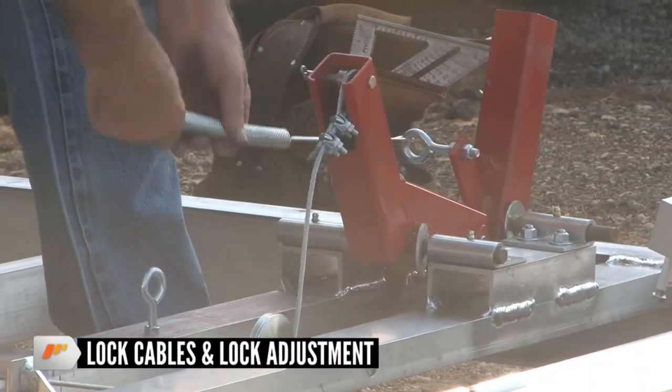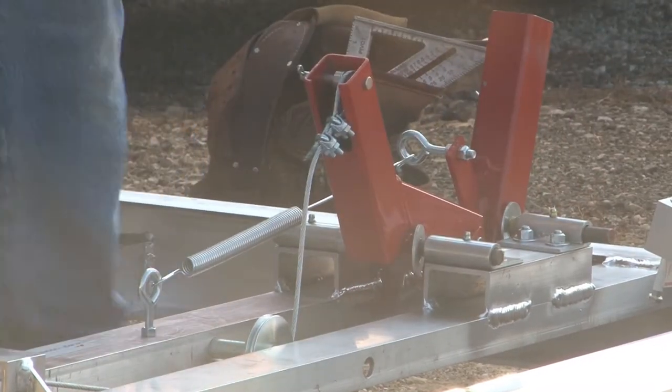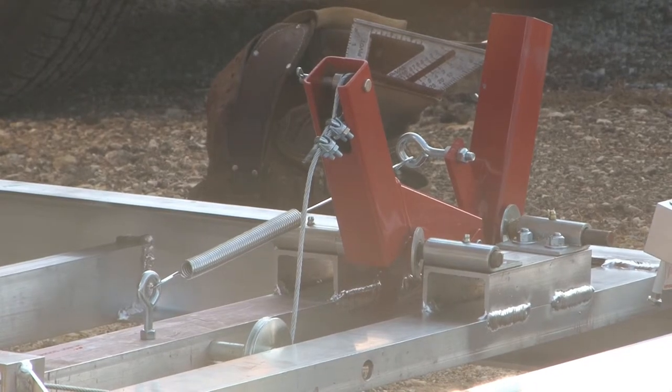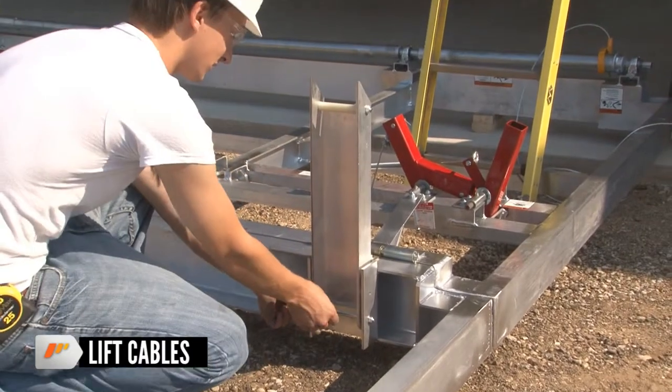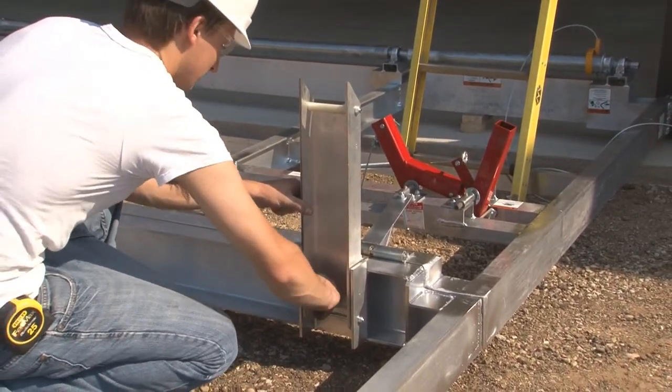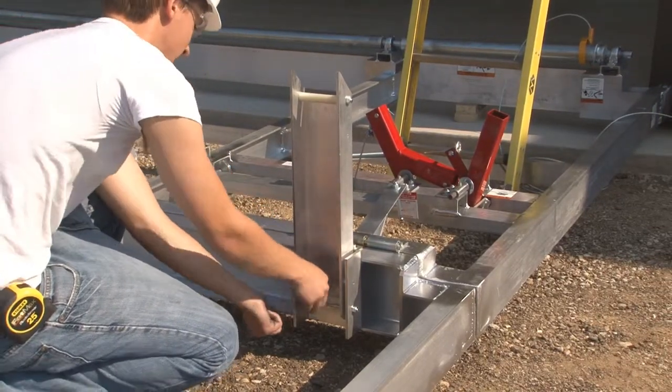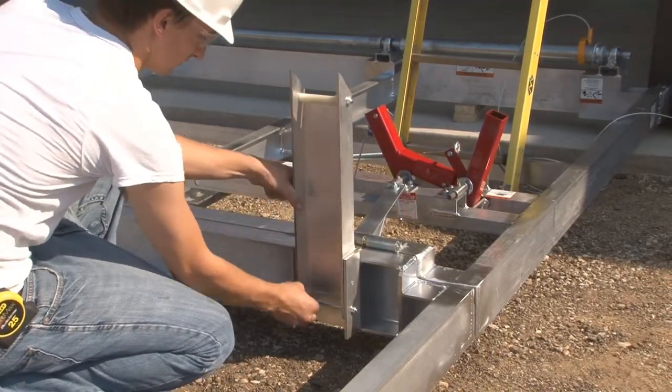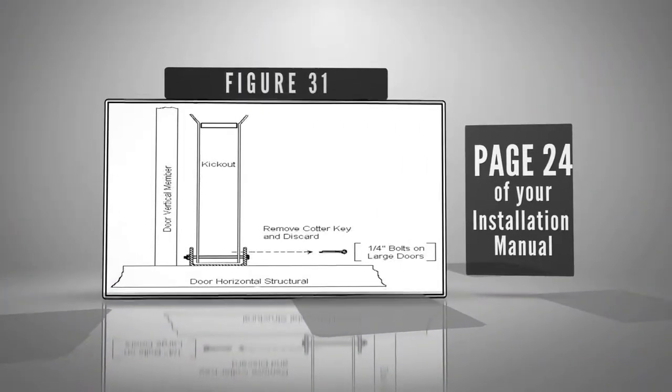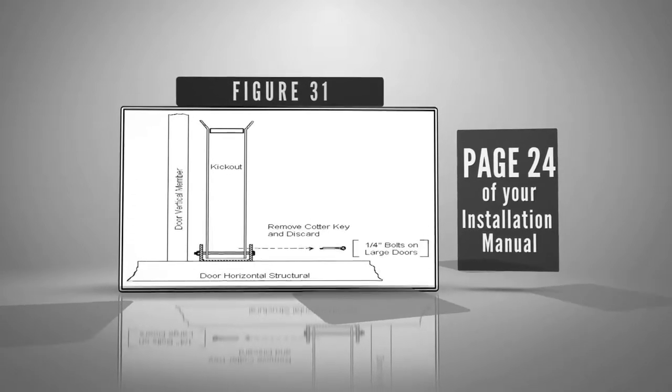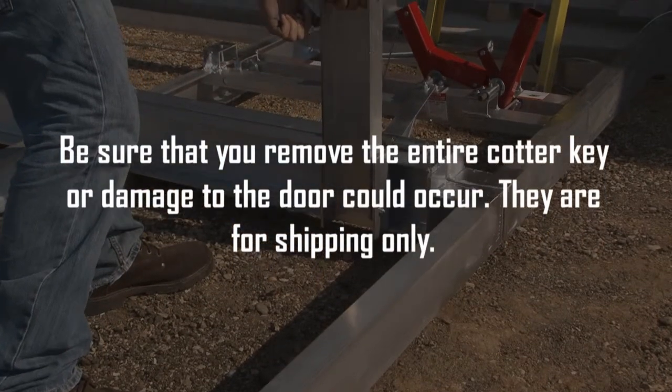Lock cables and lock adjustments. Doors with auto locks do not have lock switches, proceed to next step. Lift cables: If door is equipped with optional auto lock, this adjustment is completed later. The kickouts, which are located at the center of the door directly above the lift cables as they come off the drive shaft, must have the cotter keys removed from their side. See figure 31, page 24. The cotter keys may be discarded. Be sure that you remove the entire cotter key or damage to the door could occur. They're for shipping only.